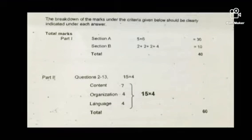Before going to the question, I want to extract some facts from the marking scheme relevant to the essay type questions. First, you have to know there are two parts in your paper. The breakdown of marks under the criteria given below should be clearly indicated under each answer. The total marks is 100, and there are two parts — Part 1 and Part 2. In Part 1 there are two sections, Section A and Section B. In Section A you are getting six context questions for 30 marks.